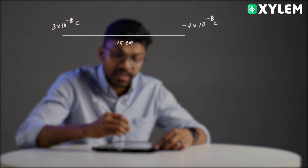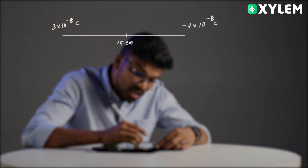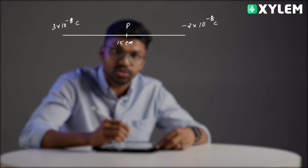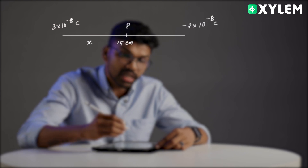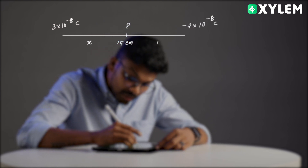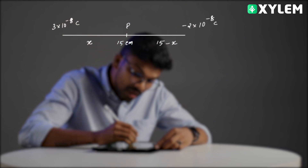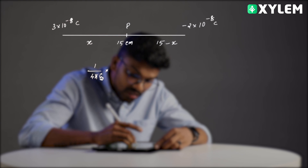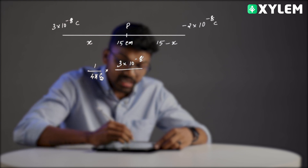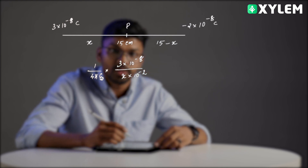Setting up the potential equation using 1/4πε₀: the first charge Q₁ = 3×10⁻⁸ Coulomb divided by the distance x, with the cm-to-meter unit conversion applied.